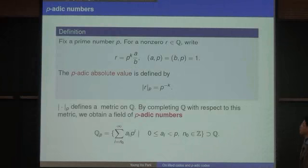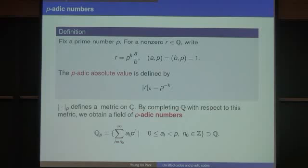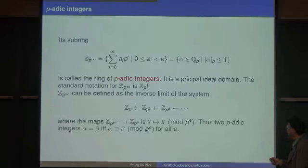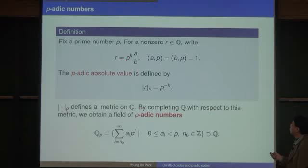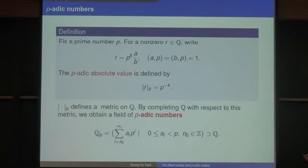I'll introduce you to the p-adic numbers. Maybe many of you know about this and maybe many of you do not. Fix a prime number p. For any non-zero r in Q, we can write r equals p to the k times a over b, where a and b are relatively prime to p. Then the p-adic absolute value of r is defined by p to the minus k.